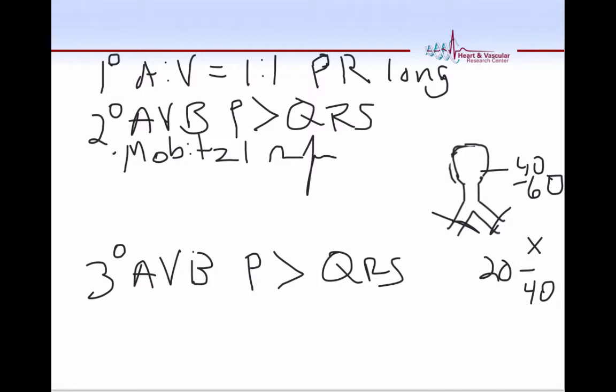When the ratio is two to one, then we have two to one block. Again, when it happens to be at the level of the AV node, two to one AV block generally is associated with a narrow complex QRS.